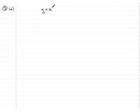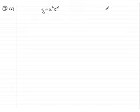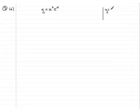Here's the worked solution to number three part a. We've got the equation of the curve C which is y equals x squared e to the x. In part a we've got to find dy/dx using the product rule. When we have y equals two functions of x multiplied together, we call them u and v. In this example, u is going to be x squared, and v is going to be e to the x.